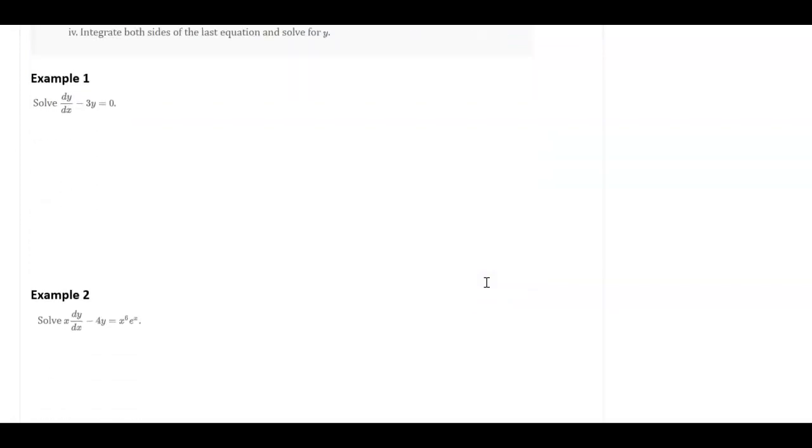Example one. In this case, we're already written in standard form, and so my p of x is equal to negative 3.